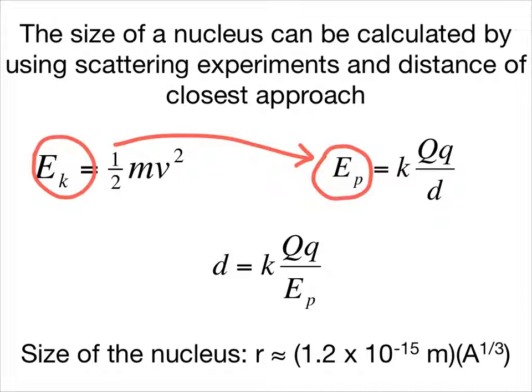By increasing the kinetic energy of the particle, the distance will approach a limit. That smallest value of d gives a good estimation of the size of the nucleus.